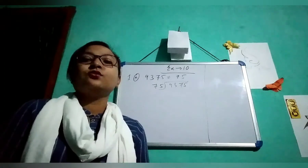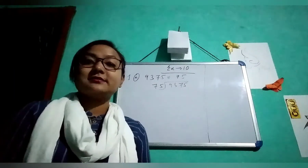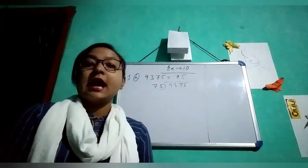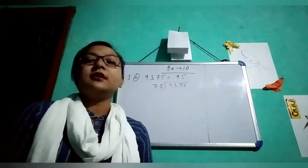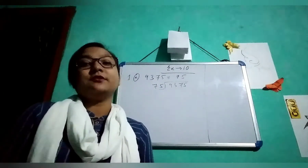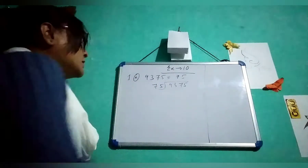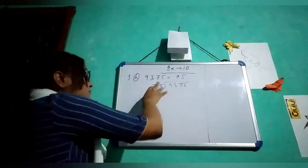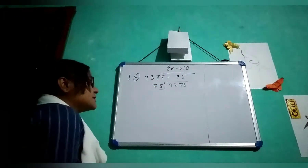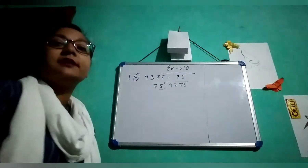Hello everyone. Today we will start a new exercise — Exercise 10. In this we will learn how to divide a 4-digit number by a 2-digit number. This is question 1A: 9375 divided by 75.